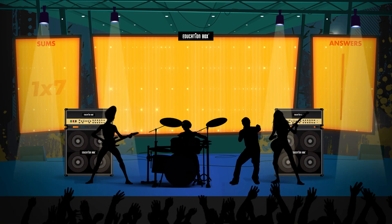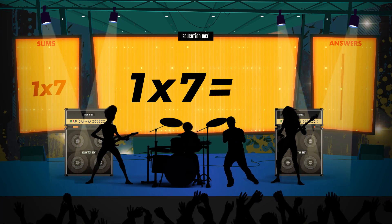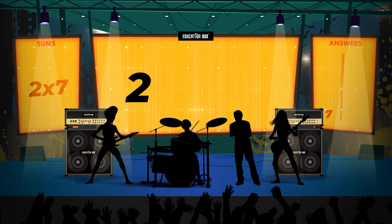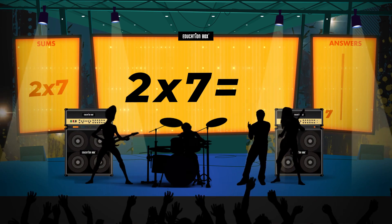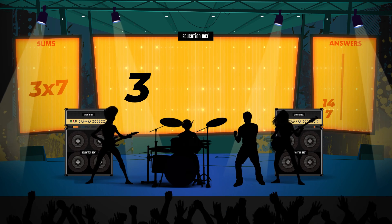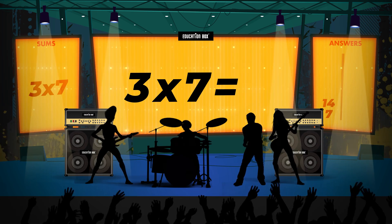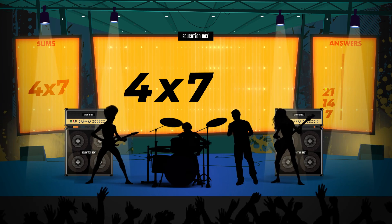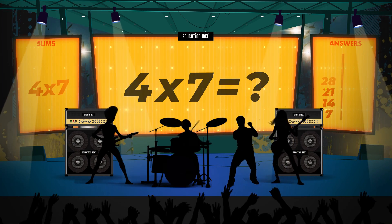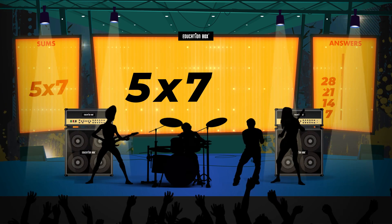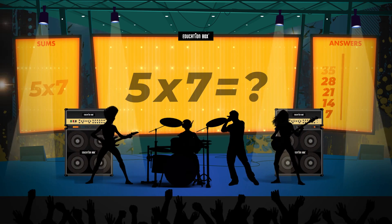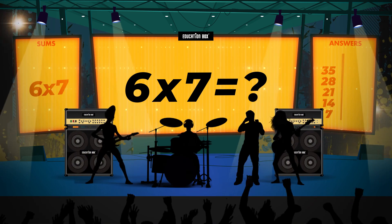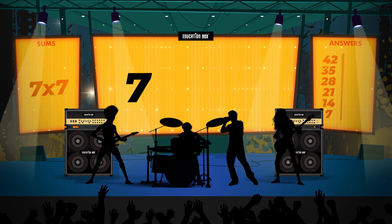One times seven is... Three times seven is... Four times seven is... Five times seven is... Six times seven is...